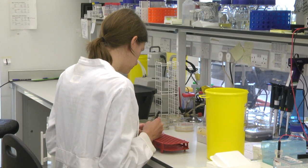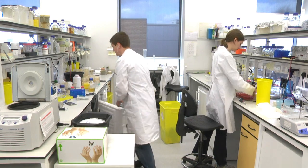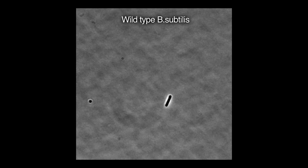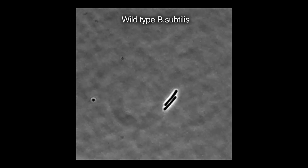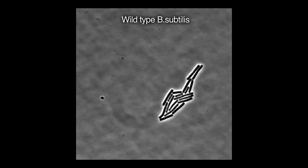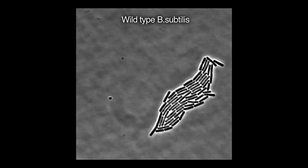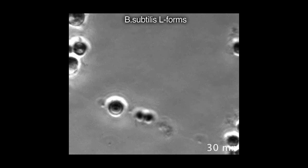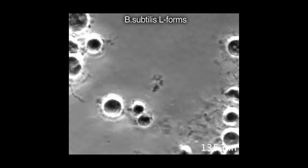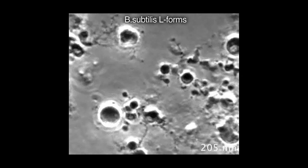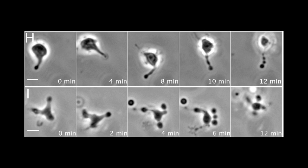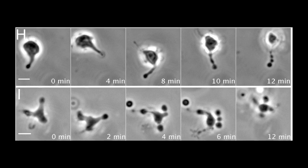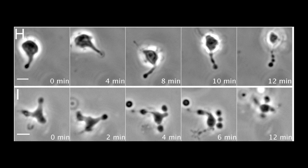We worked out how to select for L-form variants in that earlier work. Early on we came across two very big surprises. First of all, L-forms differ from normal cells in that they become completely independent of the FtsZ protein, which is essential for cell division in almost all bacteria. And secondly, the L-form cells divide and proliferate in a very haphazard manner — they're very heterogeneous in shape and in size. But if you look at stills from these kinds of movies, you see two kinds of events predominantly.